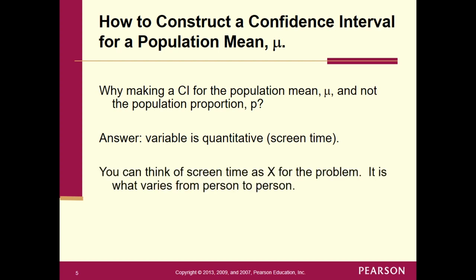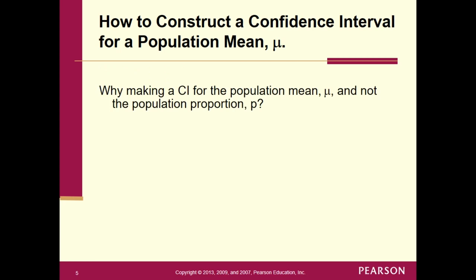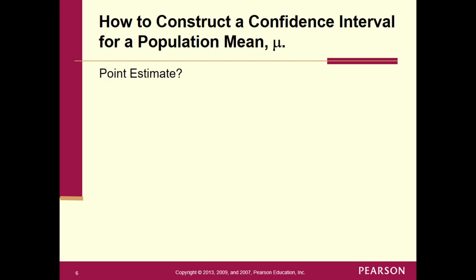Screen time is x for the problem — it is what varies from person to person, so that's your random variable. The overall random variable dictates whether we're going to be working with means or proportions/percentages. Remember our formula: point estimate plus or minus the critical value times standard error. Let's break that down into its parts.